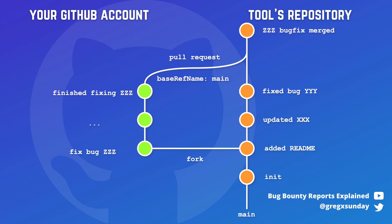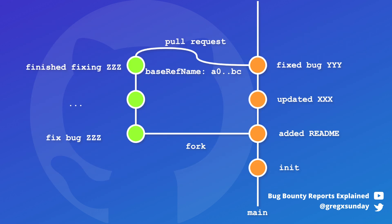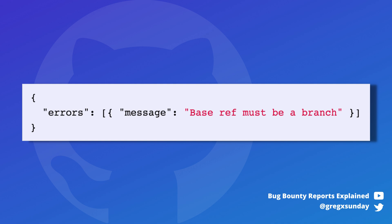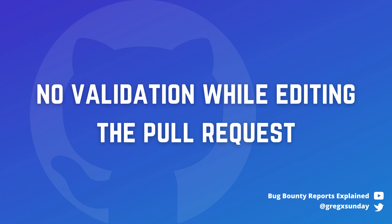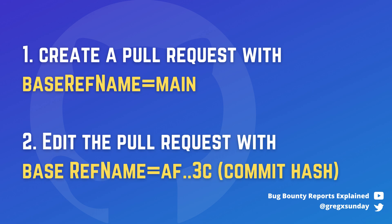And here is where our hunter comes in. This is the part of the request that creates a pull request. Base ref name is the parameter which tells Git to which branch you want to merge. The hunter asks himself: what would happen if instead of putting the branch name there, he put a 40-character commit hash instead? It would be a bug but it's unclear what the impact would be. It didn't even work at first — the response contained a message: 'base ref name must be a branch.' But turned out the check was there when creating a pull request, but there was no validation when editing it. So you could create a valid pull request to a branch, then edit it so that the base ref name is a commit hash.